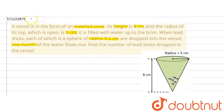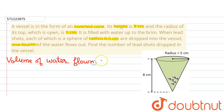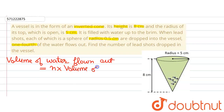We know that the volume of water that has flowed out will be equal to the volume of these lead shots. Let us assume that the total number of lead shots dropped is n. So n multiplied by the volume of one lead shot — since each shot is spherical in shape, this is the volume of one spherical lead shot.